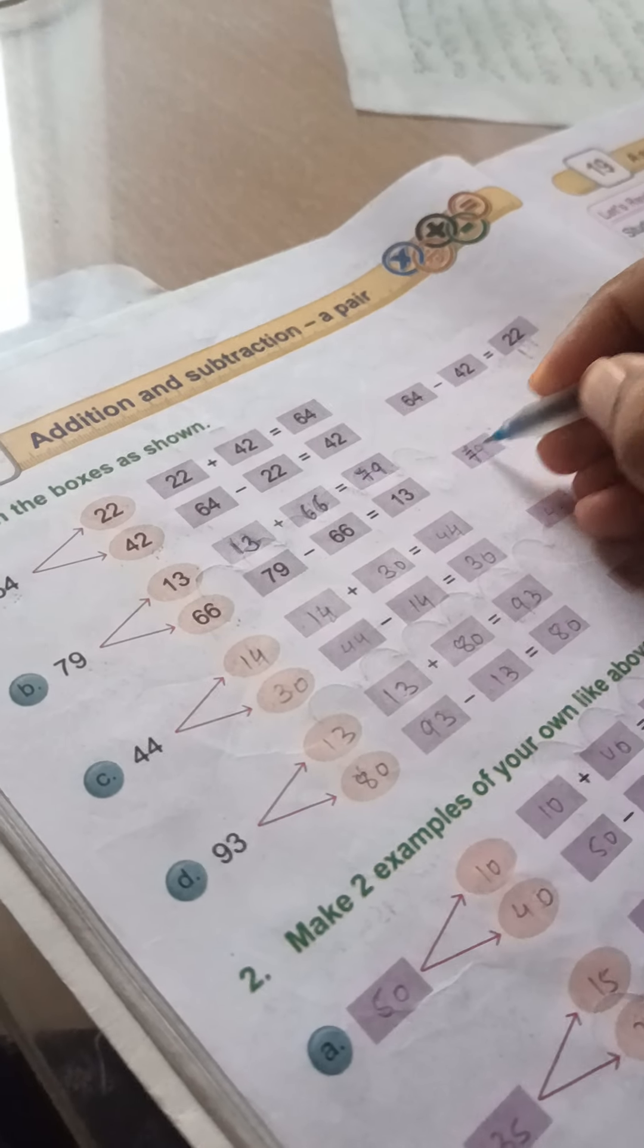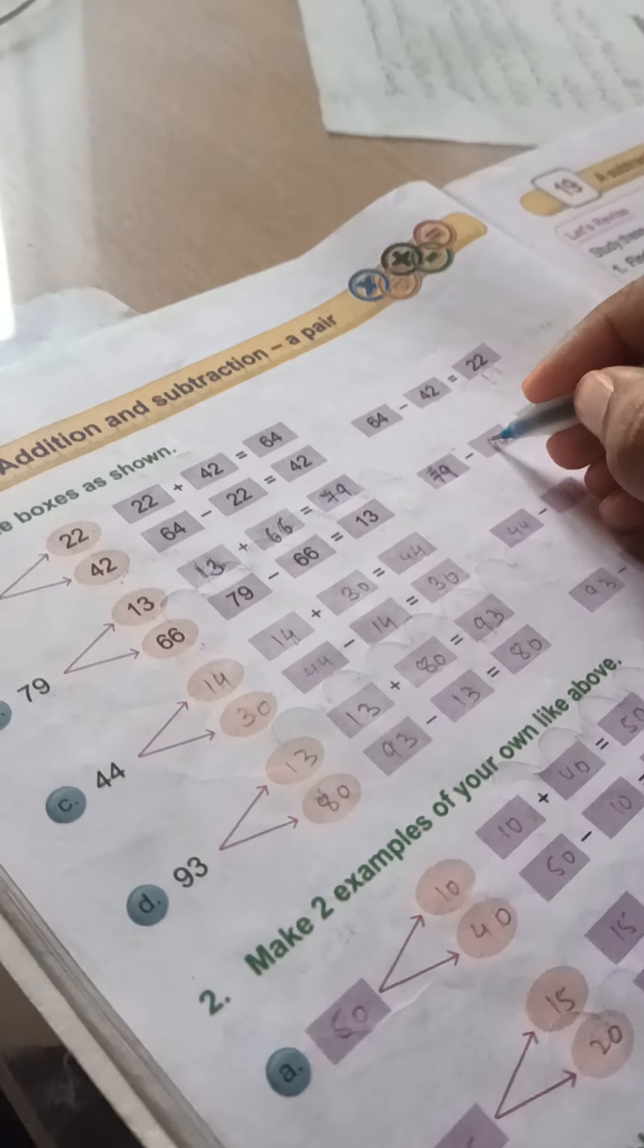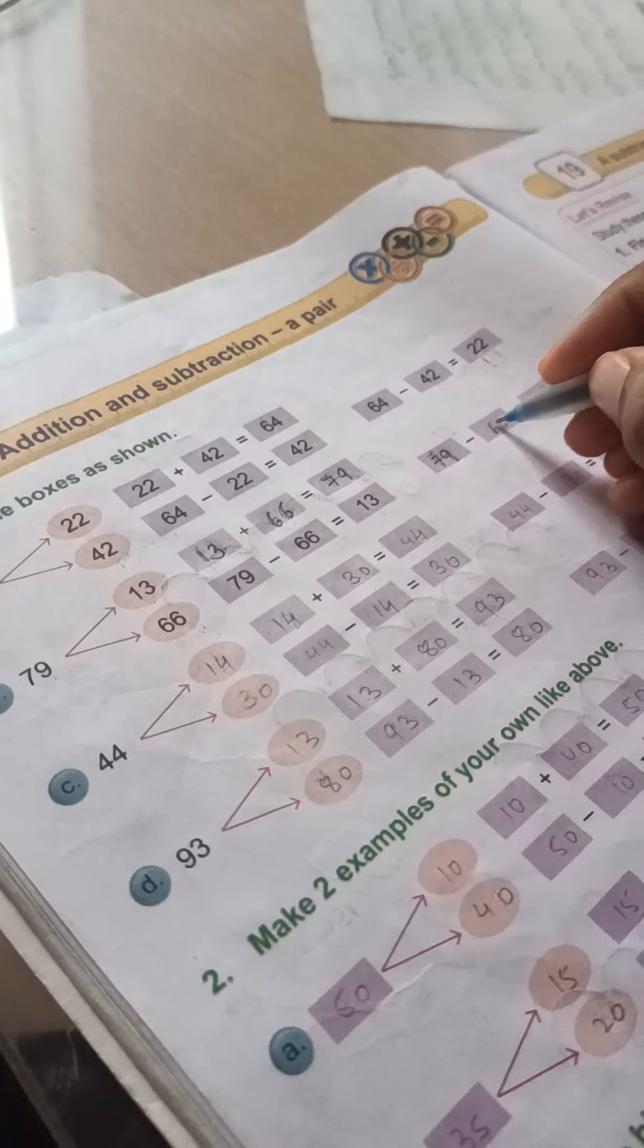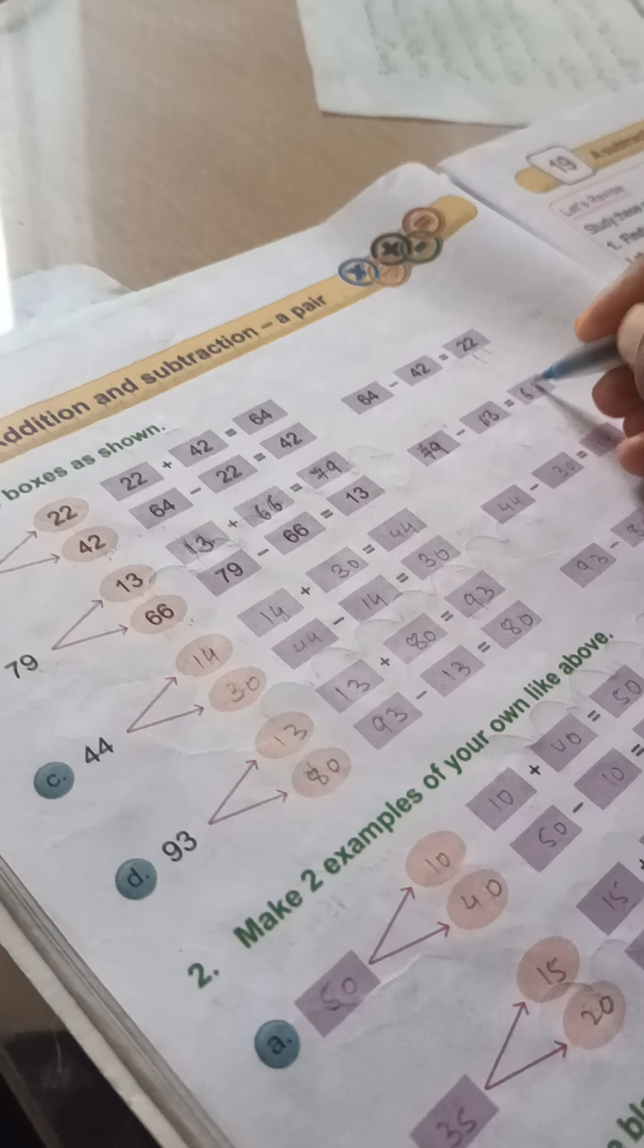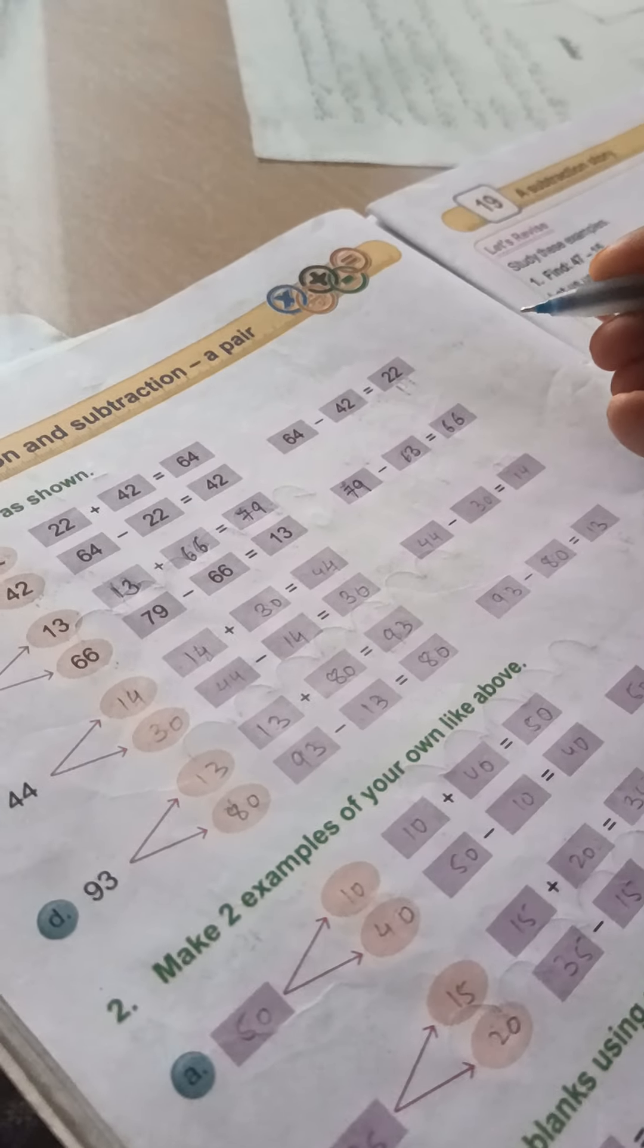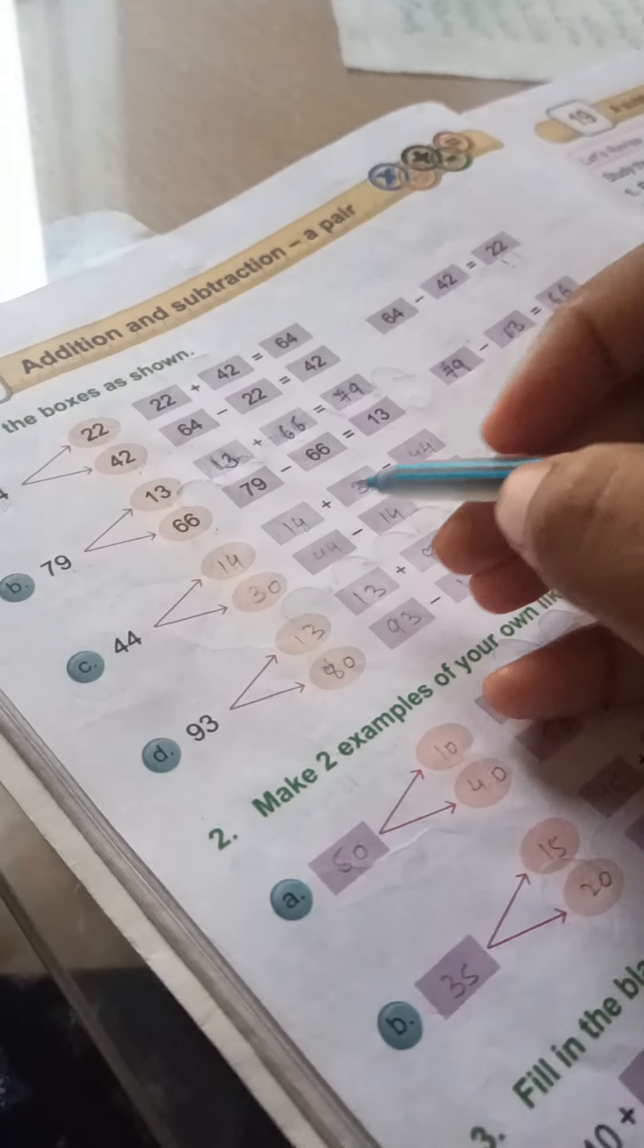The next number will be the same. So the next one will come: 79 minus 13, then our answer is 66, right? So you can do the next one more sum.